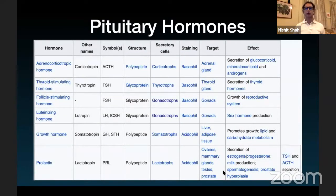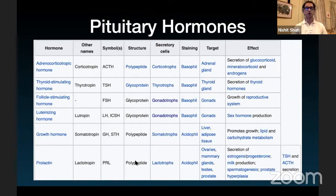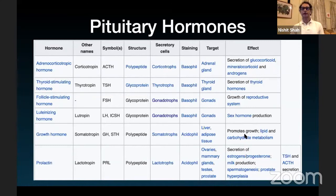This chart gives you an overview of everything the pituitary does — a list of hormones, what they're also known as, their structure, secretory cells such as corticotrophs, thyroid hormones, etc., the cell staining, and the effect. Over-secretion will give you Cushing's, thyroid disorders, acromegaly, or prolactinoma.